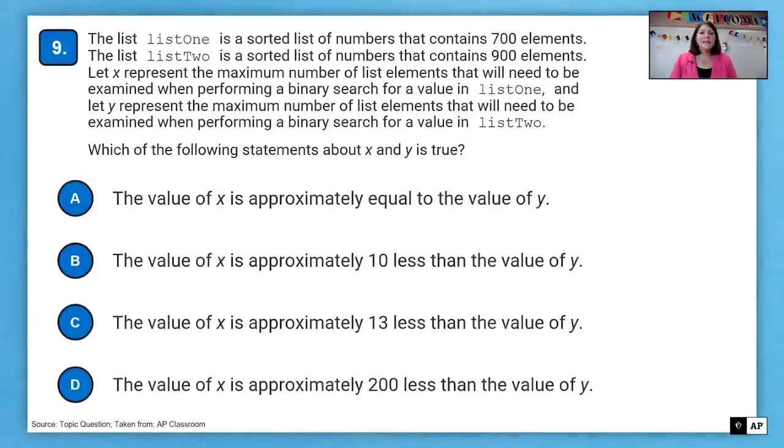All right. On to question number nine. The list, list one is sorted, is a sorted list of numbers that contains 700 elements. The list two is a sorted list of numbers that contains 900 elements. Let X represent the maximum number of list elements that will need to be examined when performing a binary search for a value in list one. And let Y represent the maximum number of list elements that will need to be examined when performing a binary search for a value in list two.